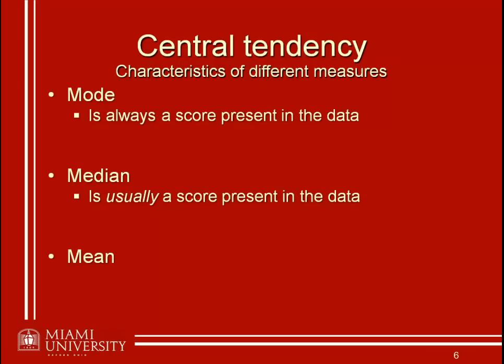The median is usually going to be a score present in the data, as long as it doesn't fall between the bottom half and top half of an even-numbered data set. That's why you'll often see the median reported for census-type data, because it makes much more sense to say the average household has 2 or 3 of something than to say it has 2.2475 of something. No household is actually going to have 2.2475 kids, TVs, or cell phones. The median is more interpretable in that regard.